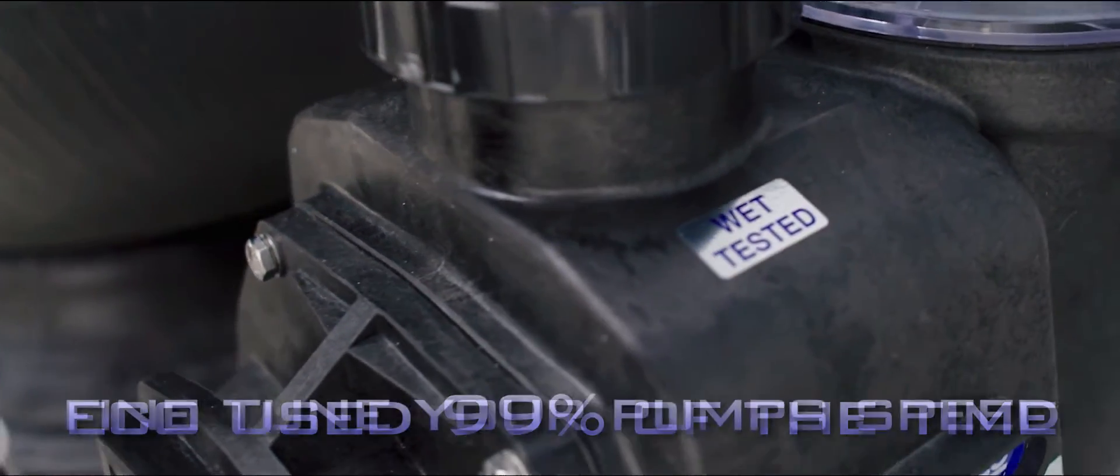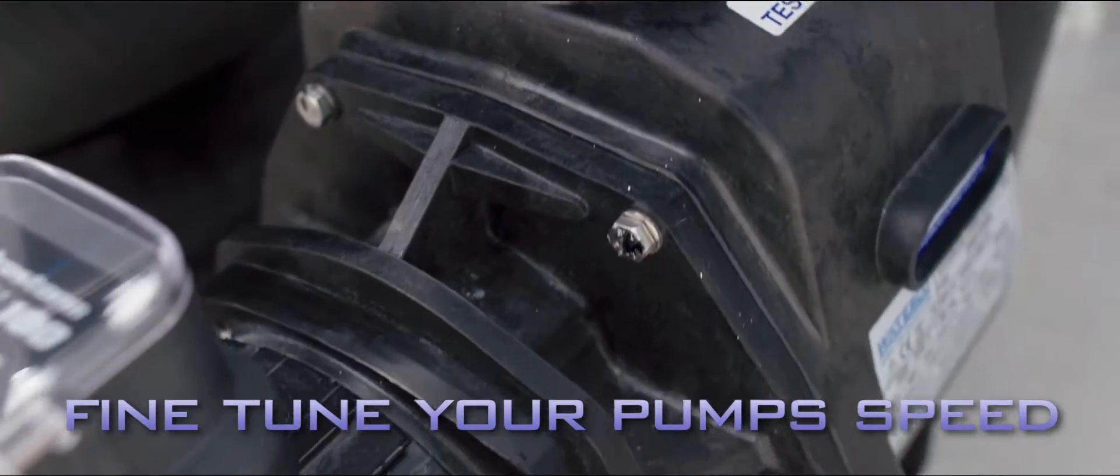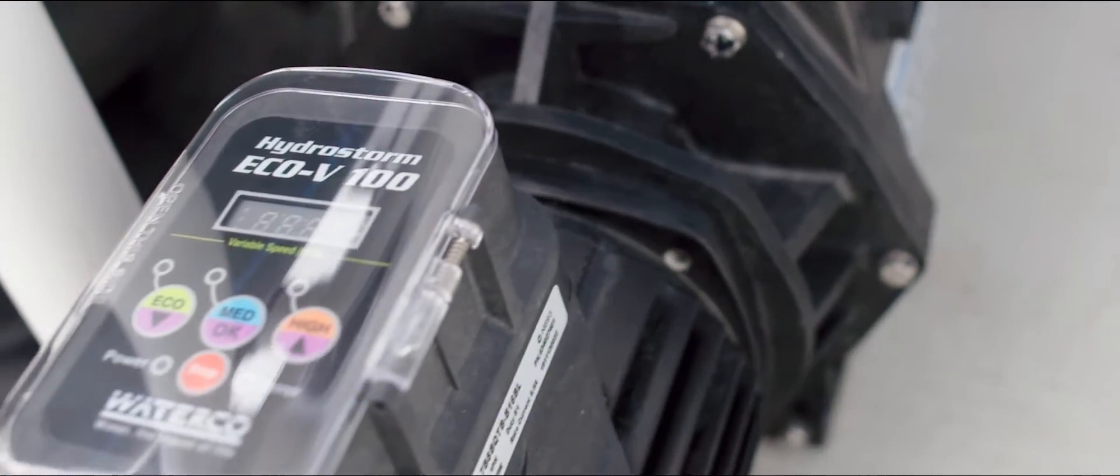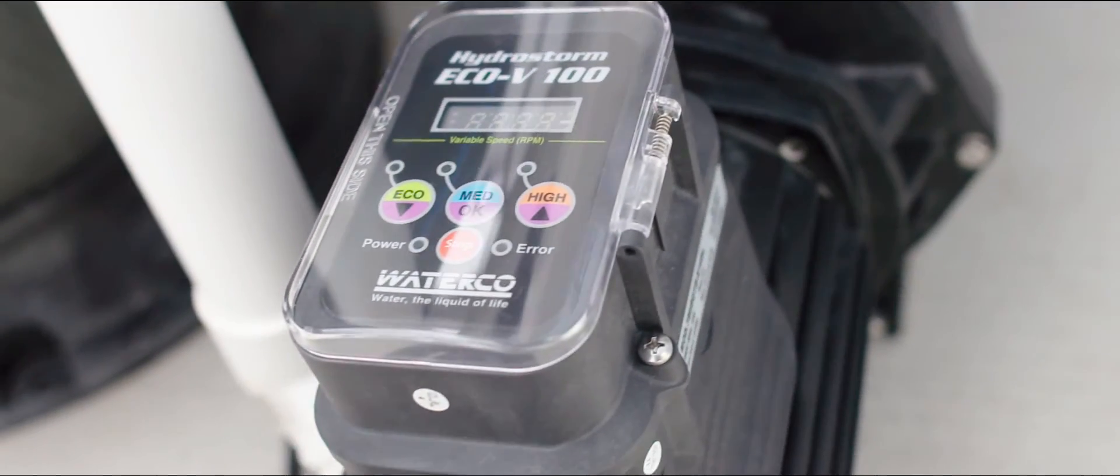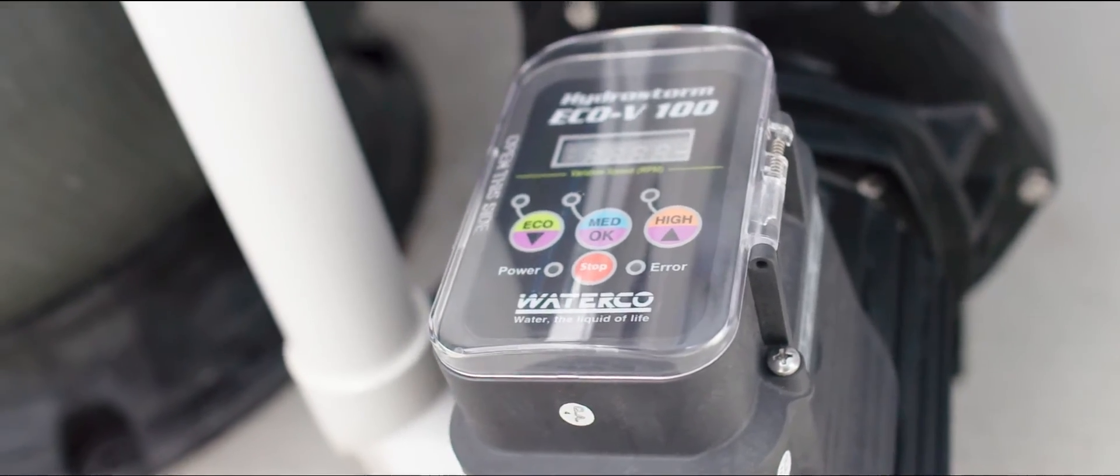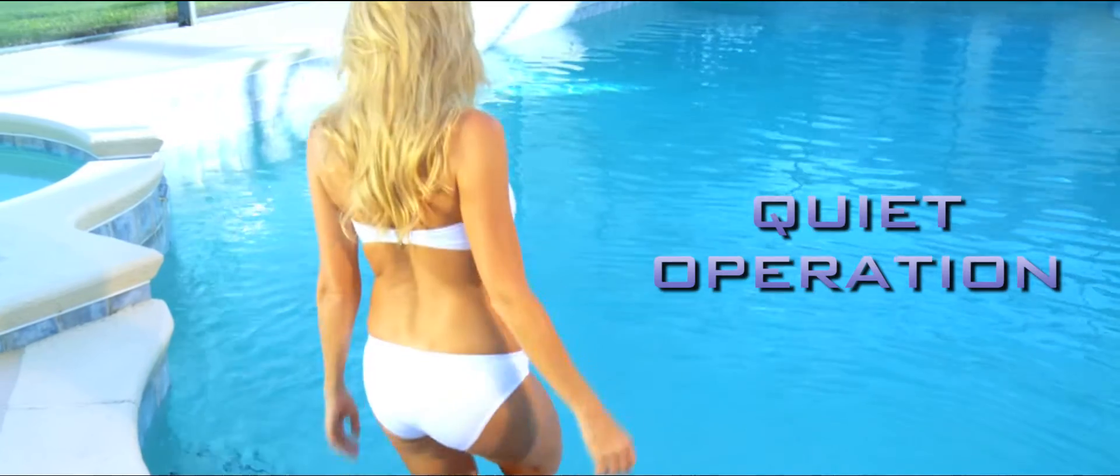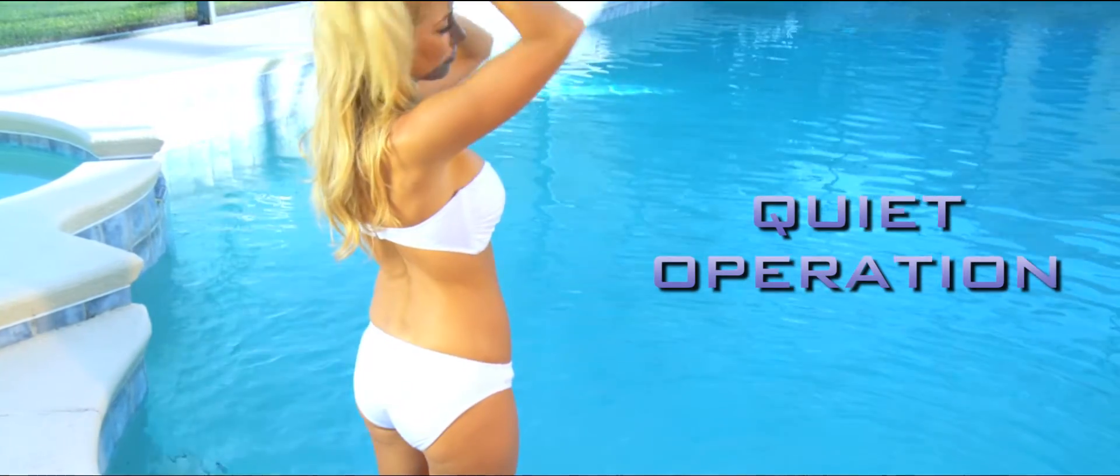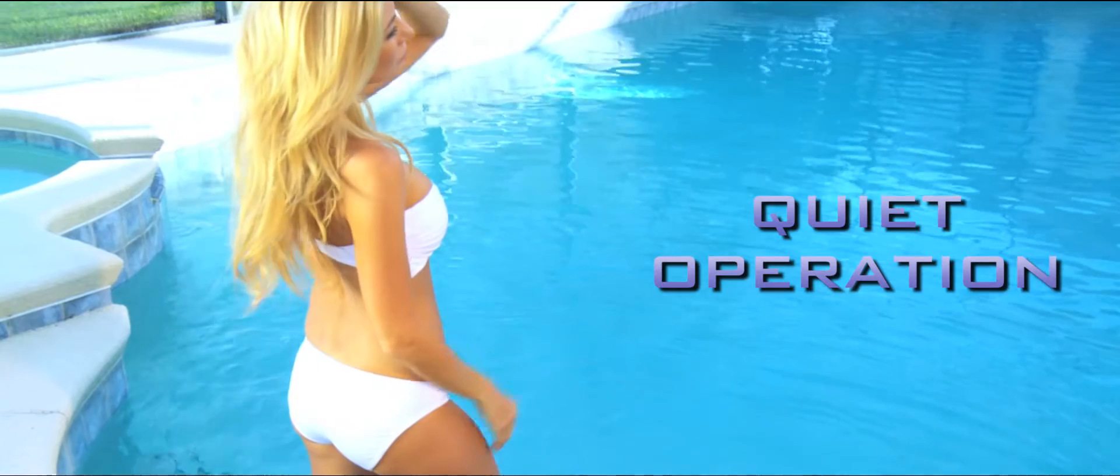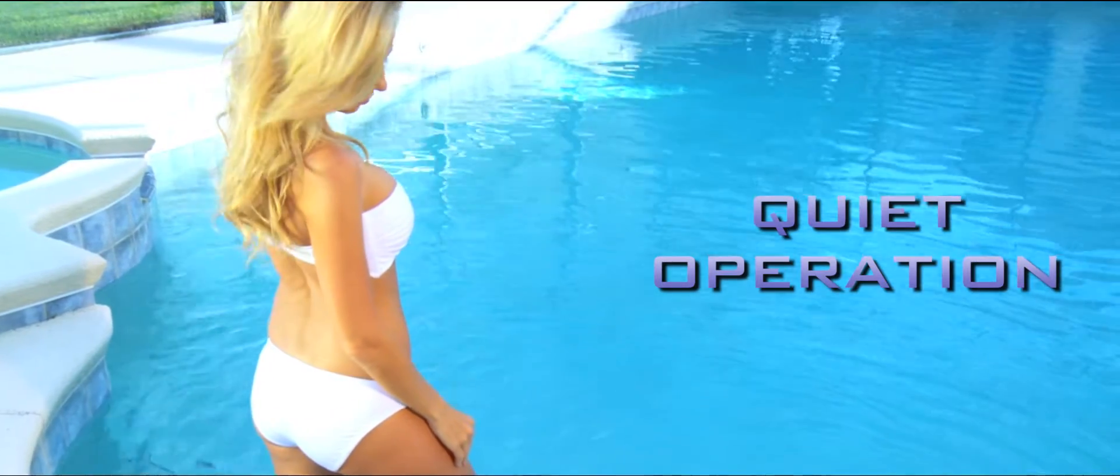The HydroStorm Eco-V goes a step further, giving you the ability to fine-tune the pump's motor speed, allowing a perfect match to the flow requirements of a swimming pool, maximizing energy savings and minimizing pump noise. The Eco-V can potentially operate at speeds lower than conventional multi-speed pumps, further improving both energy savings and noise reduction.